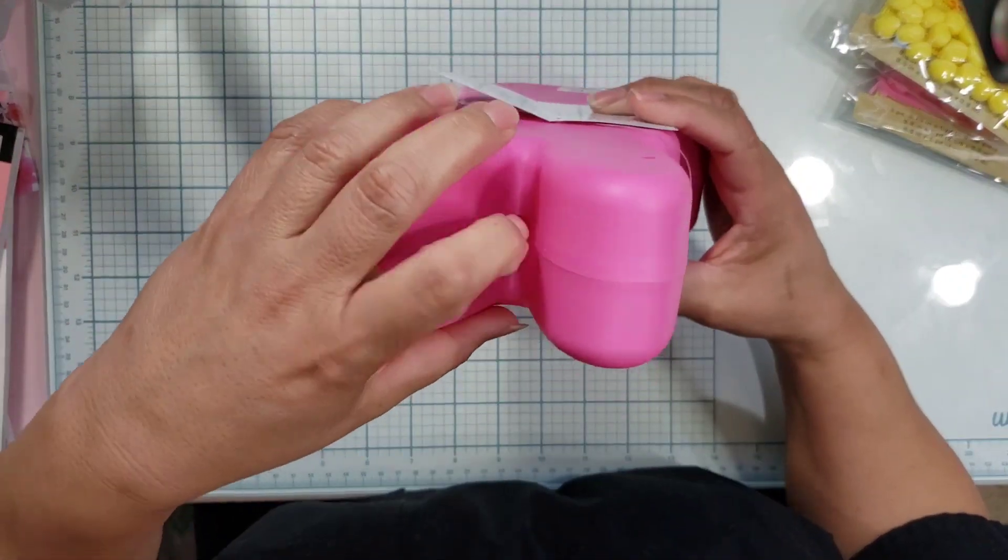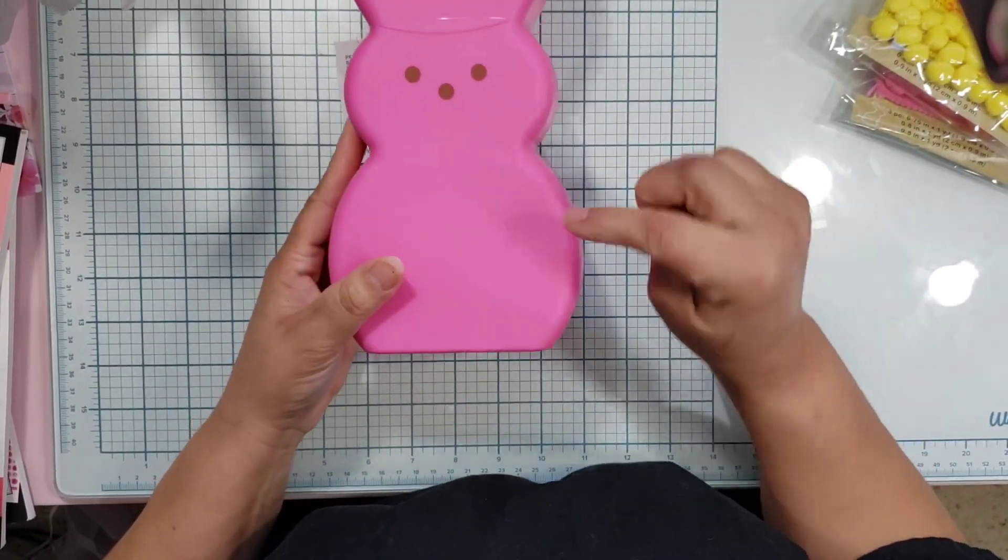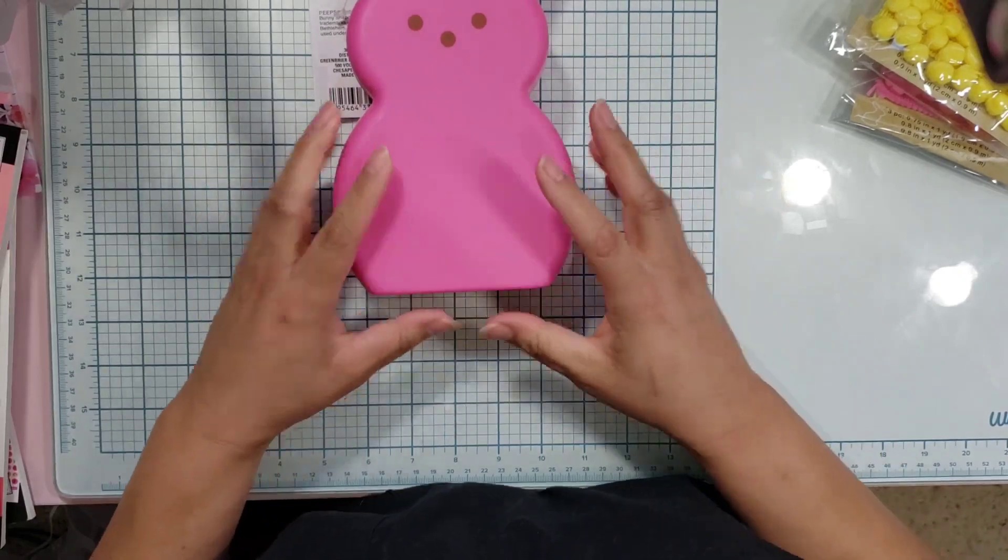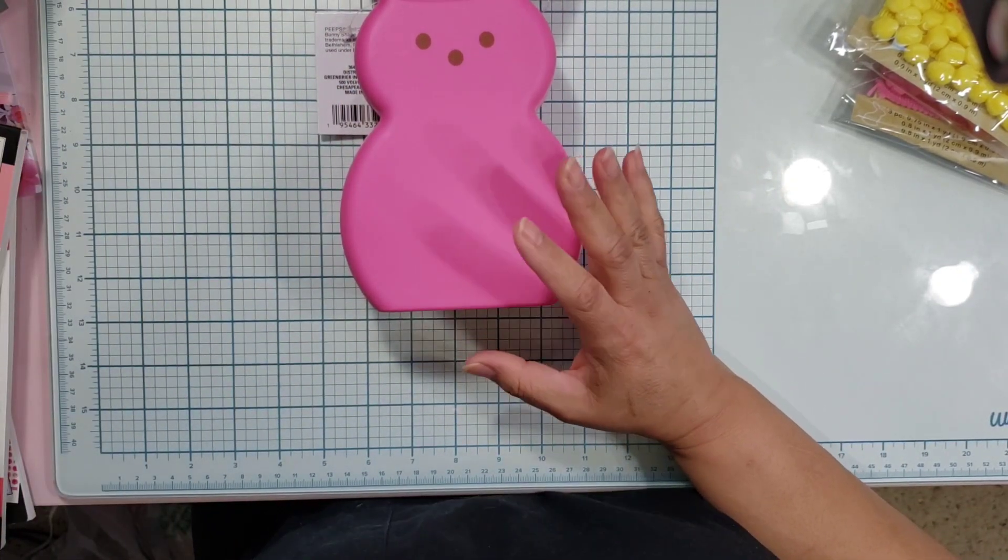The peep bunny is the five dollar item. They also have them in yellow. I think the only two colors I saw were pink and yellow. I grabbed the last two pink ones at this location.